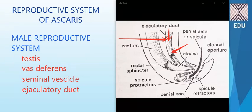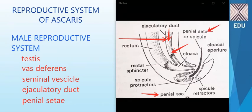After this we have another structure called the penial setae, which are two in number and are present in the cloacal sac or penial sac. As you can see, the penial sac is shown in the diagram — it is marked as a single penial seta but there are two in number in male Ascaris.